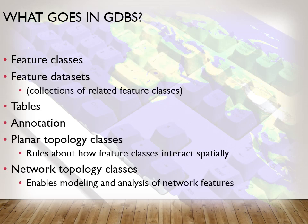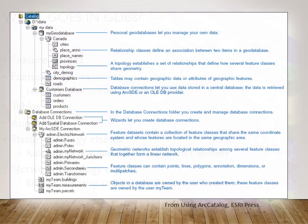Within a geodatabase you can also add annotation, topology, and network topology. For example, let's say you have a geodatabase called mygeodatabase with a feature dataset called Canada. Within Canada, you have cities, annotation — which are labels with a little more flexibility — place names, polygons, and topology. When you work in a GIS at a large company, you might have database connections in a central location where all your geodatabases reside.